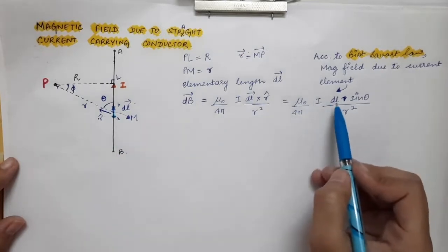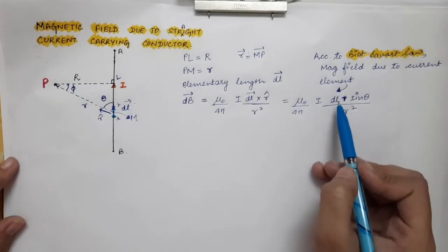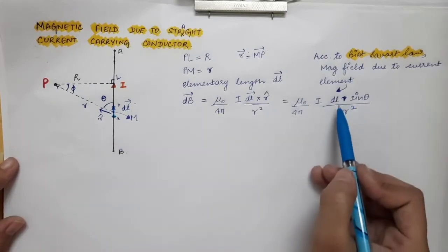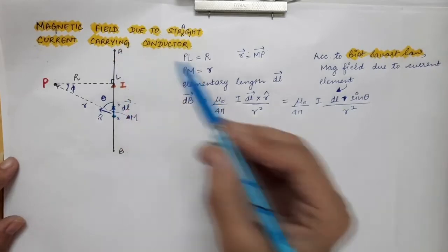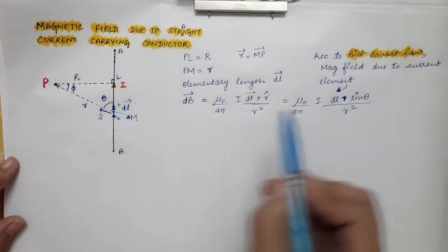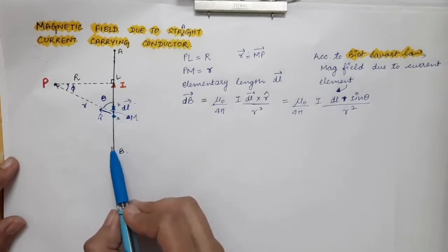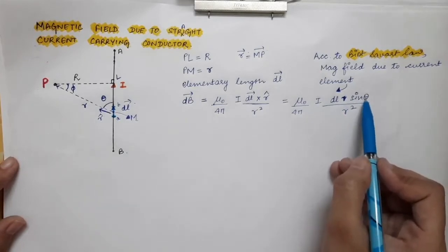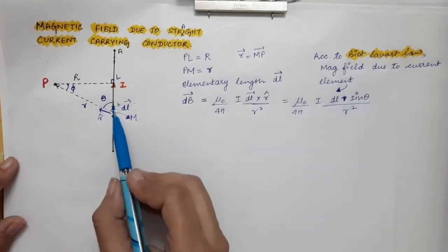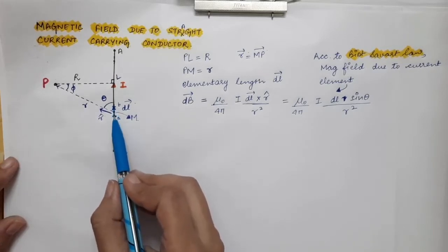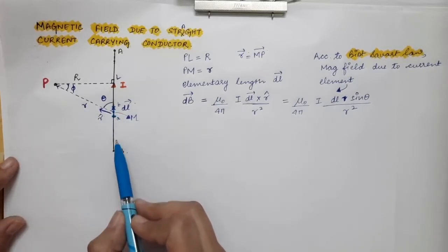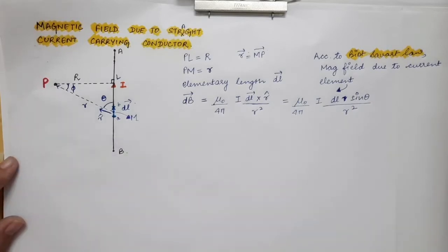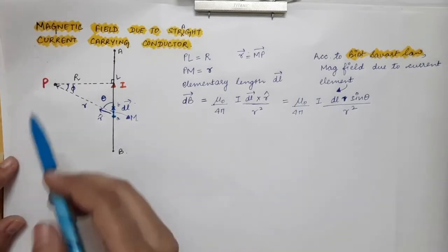Here we have three variables. L is a variable because the length of the conductor varies from B to A. Theta is also a variable — if you take a length element at different positions, the angle theta will be different. Small r is also a variable; as you change the location of the length element, the distance from the element to observation point P will also change. So we will express all three variables in terms of the single variable phi.